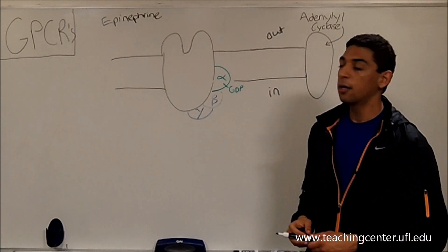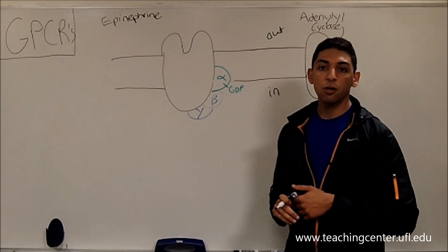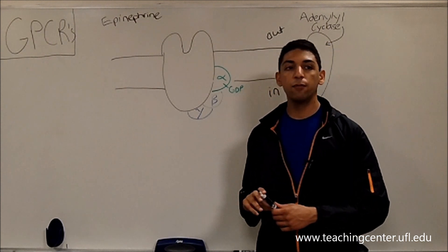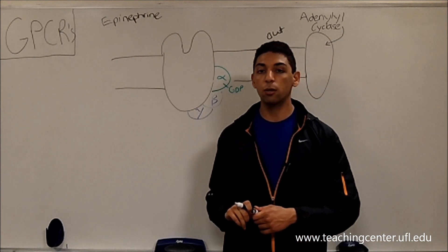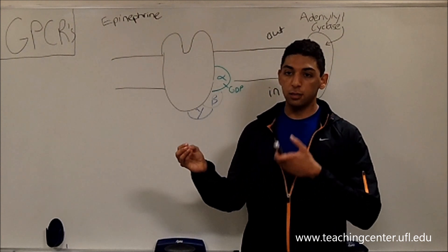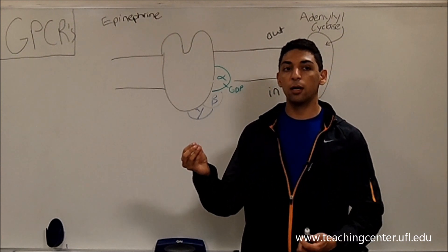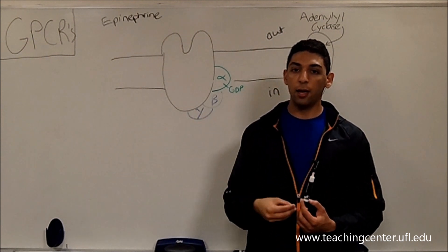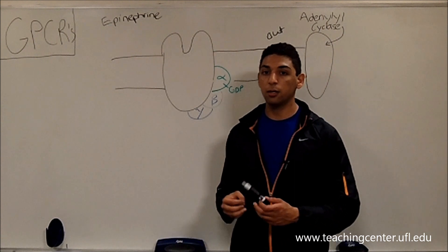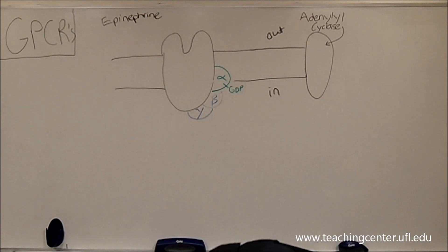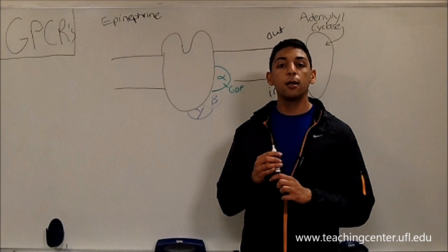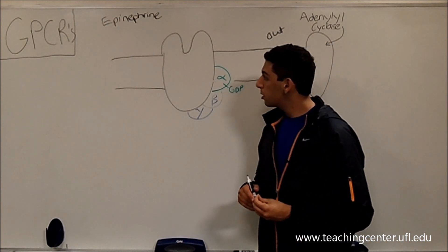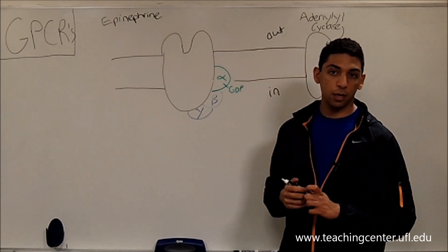There are actually two ways that communication in general happens. The first way, which you're probably most familiar with, is a signaling molecule that's made outside of the cell and needs to get into the cell. It will travel through a membrane protein — an ion channel or whatever type it may be — to get to wherever it needs to go and relay its message. In that case, it would literally cross the membrane.